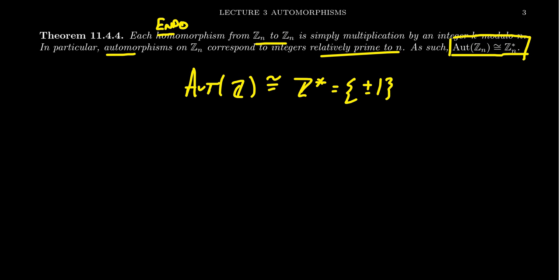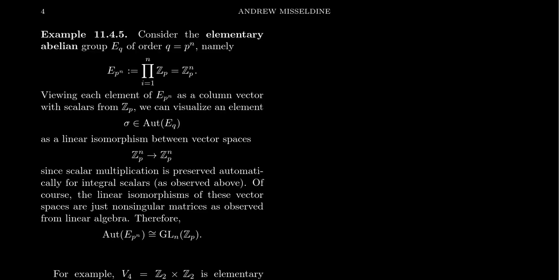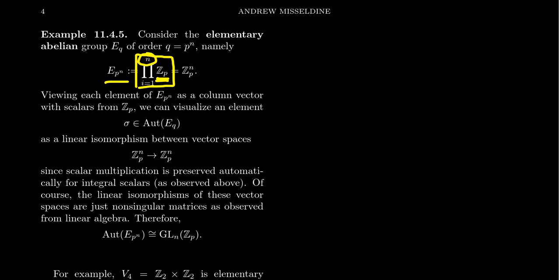In general, automorphism groups can be more complicated, but there's one other abelian group with an easy-to-describe automorphism group worth mentioning: the elementary abelian group, often denoted E_q where q is a power of a prime p. The elementary abelian group E_{p^n} is the direct product of ZP taken n times — that is, n direct copies of the cyclic group of prime order p. These notations, ZP^n or the direct product form, are the most common ways to write elementary abelian groups.